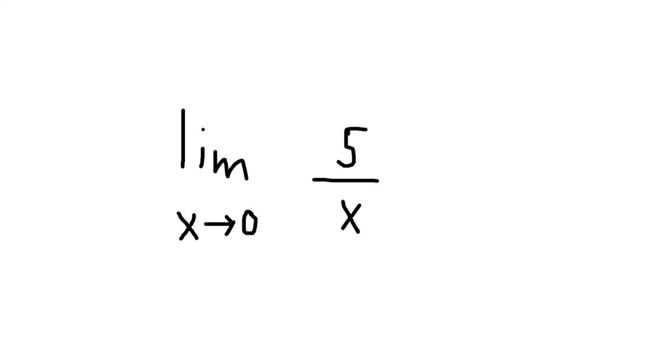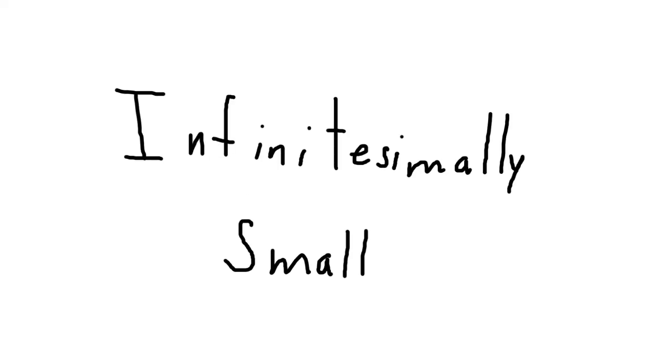Let's write out this limit as x approaches 0 of 5 divided by x. Technically, we're not dividing by 0. We're dividing by a number so small that it might as well be 0. This is what's called infinitesimally small. So what's 5 divided by a ridiculously small number?